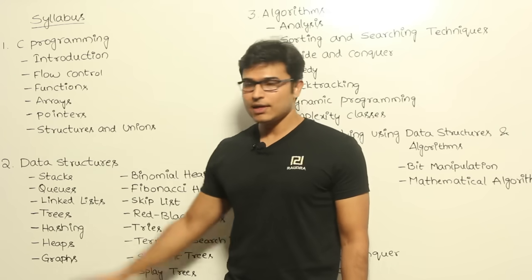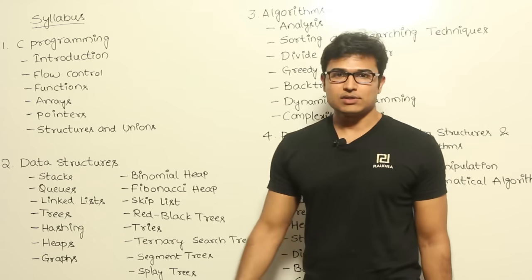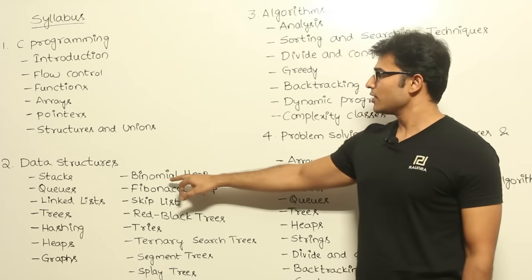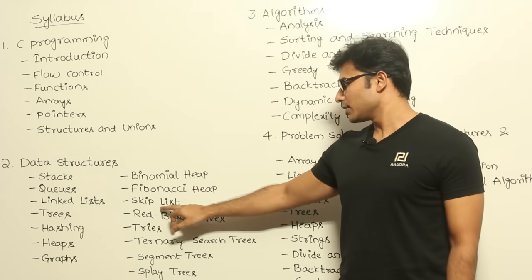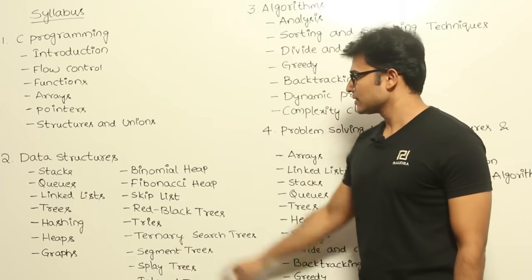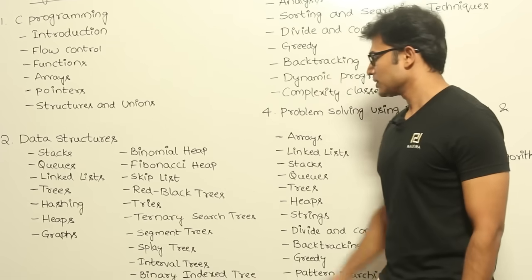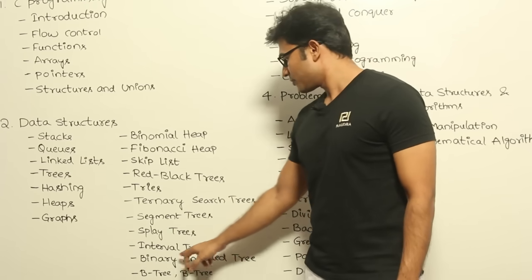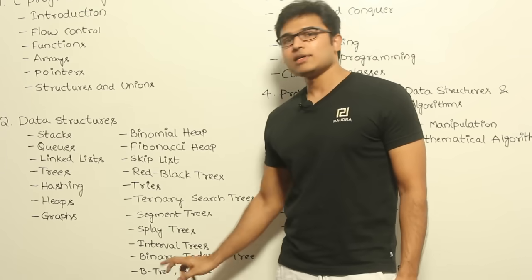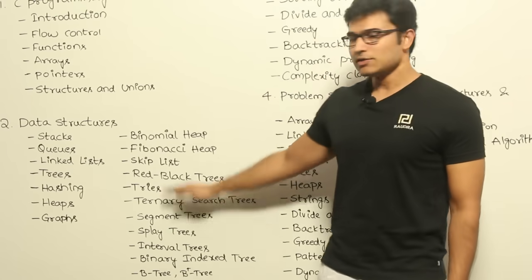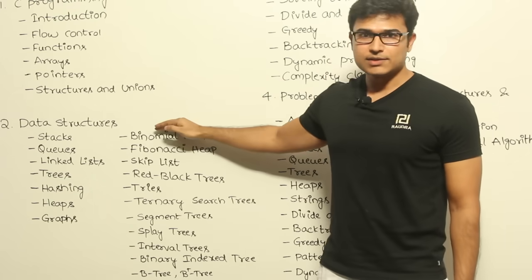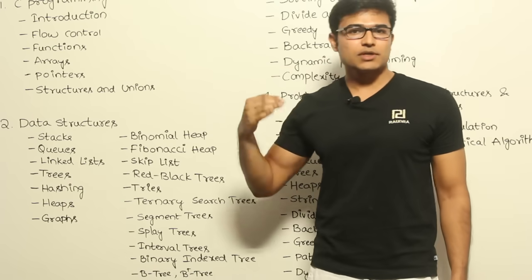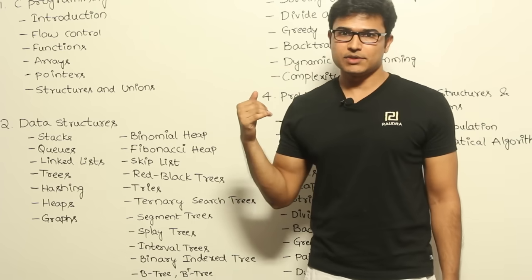After the basics are done, we move to advanced data structures, covering binomial heaps, Fibonacci heaps, skip lists, red-black trees, tries, ternary search trees, segment trees, splay trees, interval trees, binary index trees, B-trees, and B+ trees. For each concept we start from the basics and explain the data structure along with standard examples.